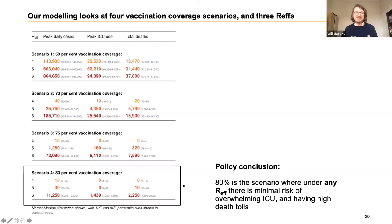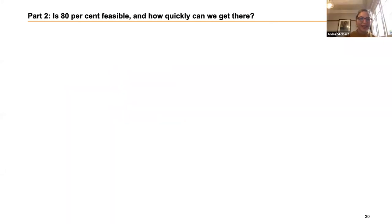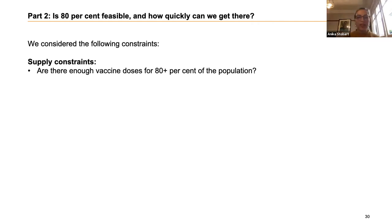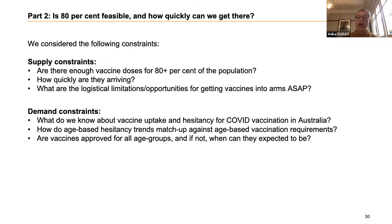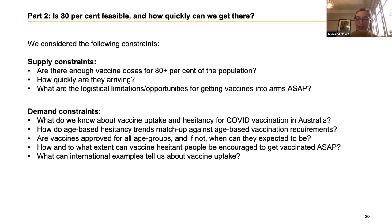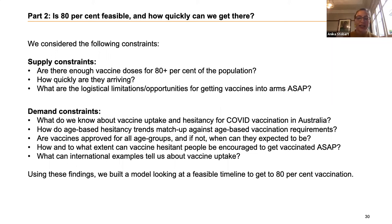That's the COVID modeling. I'll now pass on to Annika, who will run through our vaccination modeling. The second question here is really: we've got this 80% target — is it actually feasible? Can we do it in Australia? And if so, how quickly can we get there? We need to think about: are there supply constraints? Are there enough vaccine doses available and how quickly are they arriving? What are the logistical limitations? And on the demand side, are enough people wanting to get vaccinated? What are the rates of hesitancy and uptake, and how do they vary between age groups?